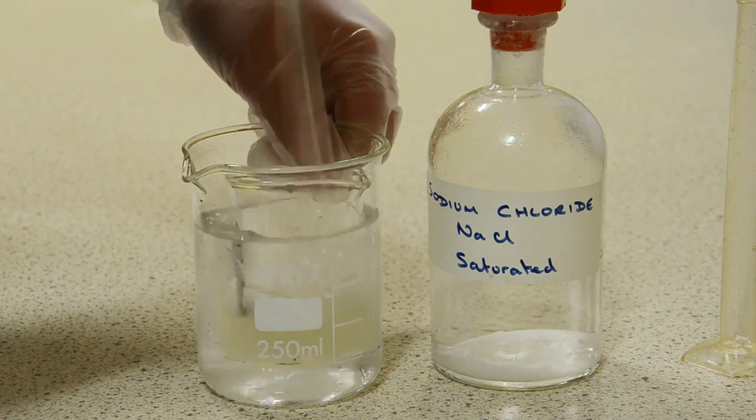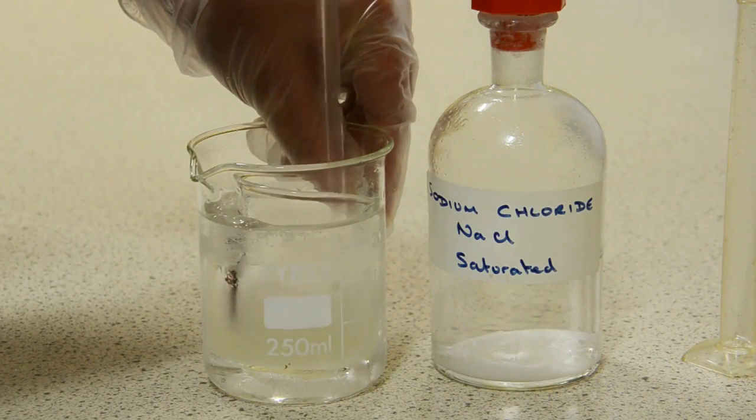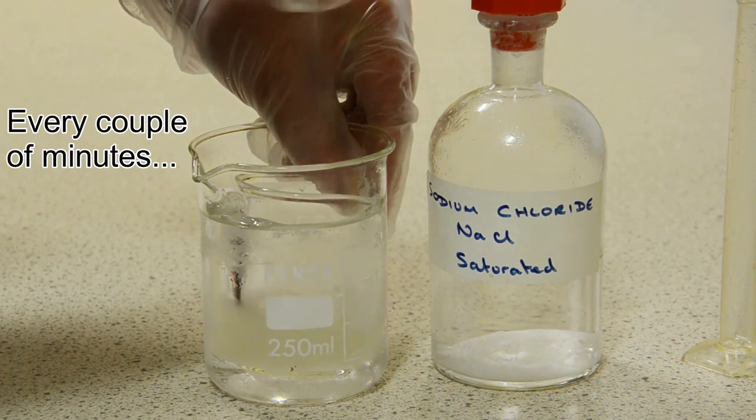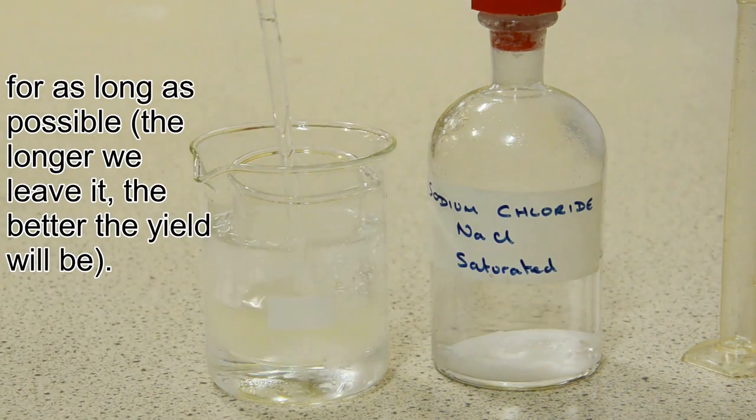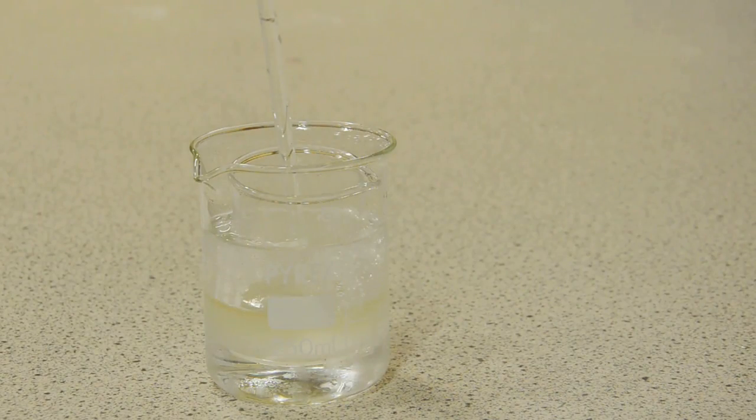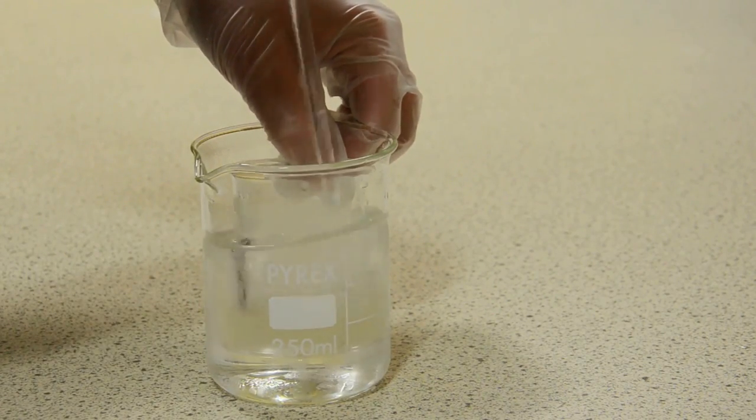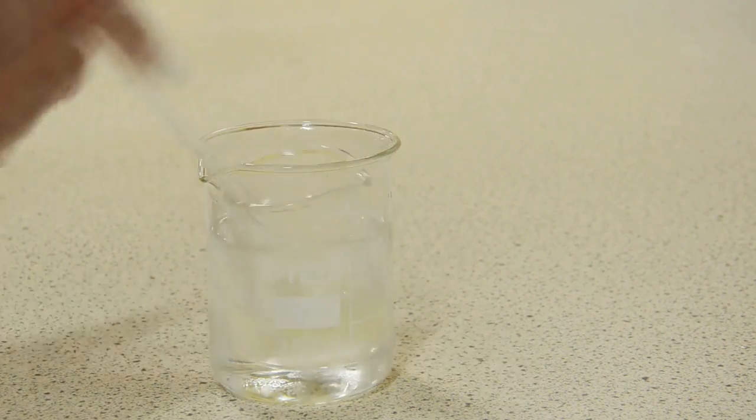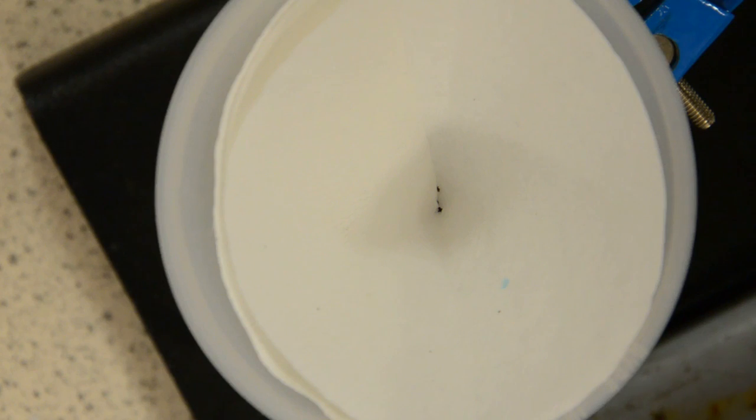One way of helping yourself to remember that saponification is all about the manufacture of soap is to remember that the word sapo is the Latin word for soap. You can also remind yourself about the ingredients used in the soap manufacture process by thinking about the history of early soaps. We think they were made as early as 5,000 years ago when the ancient Babylonians boiled animal fats with ashes which contain potassium hydroxide. So that's fats with an alkali.